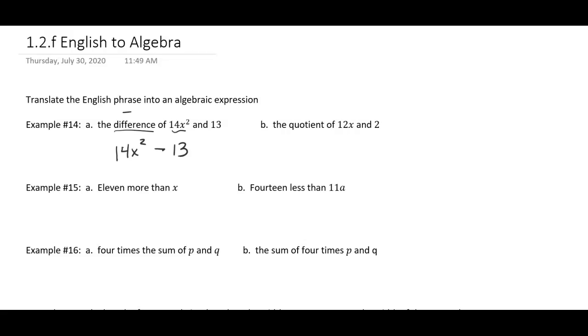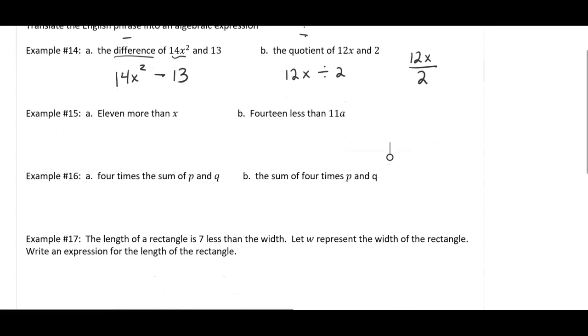Part B says the quotient, quotient means divide, of 12x and 2. You could write it as 12x ÷ 2. More likely though, in our class, we're going to usually see it written this way, 12x/2 written that way. I don't care which way you write it, but just so that you know, in the future, you're going to write it that way.